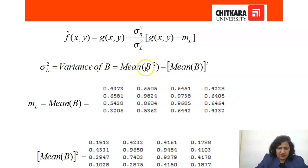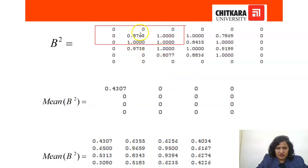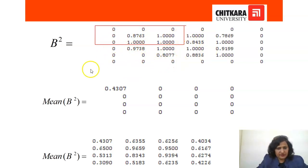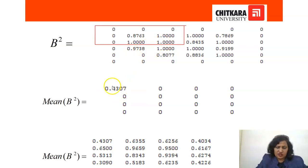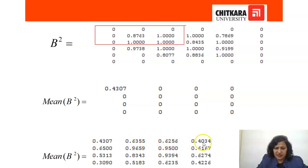So we will square each pixel of B to get the B-squared matrix. Then to find the mean of B squared, take a 3x3 window, add all nine pixels and divide by nine. You get 0.6355 for the first pixel. In the same way we will get the local mean of B squared for every pixel.